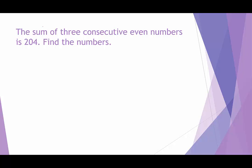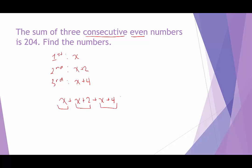Lastly, the sum of three consecutive even numbers is 204. We'll call the first number X. The next consecutive even number is X plus 2, and the third is X plus 4, because we skip over the odd number each time. Their sum: X plus (X plus 2) plus (X plus 4) equals 204. Combining like terms: 3X plus 6 equals 204. Subtracting 6 gives 3X equals 198, and dividing by 3 gives X equals 66.